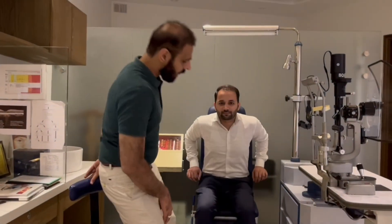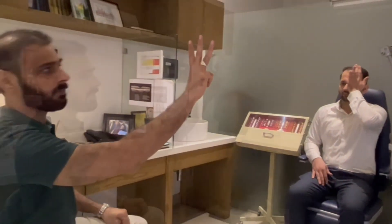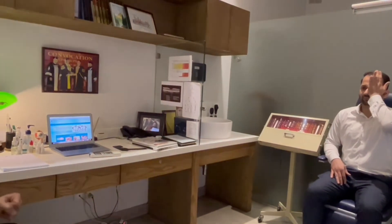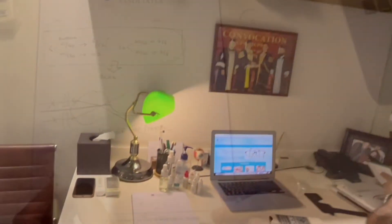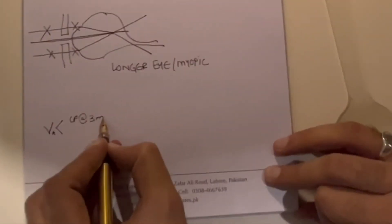If he still cannot read, I show him fingers. Asking how many fingers he can see — for example, three fingers at one meter — I then move further back to find the maximum distance at which he can count them. If that point is about three meters, we write the visual acuity of the right eye as counting fingers at three meters.